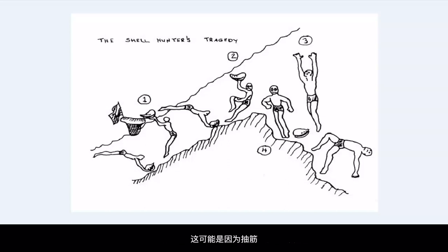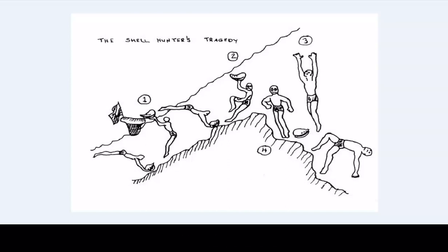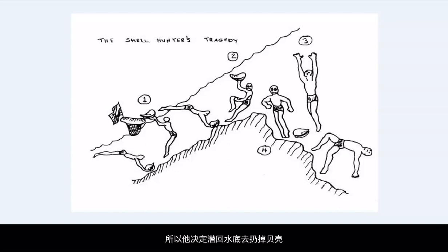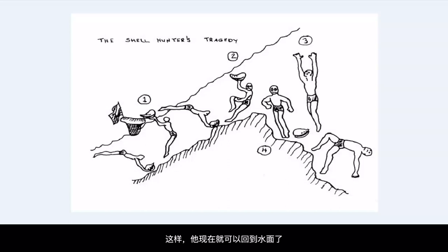This unexpected event could be cramps, which is shown at point 2. The diver had gone to the bottom, picked up a shell, but as he was bringing it to the surface, he could not reach the surface because of a bad cramp. So he decides to go back down, drop the shell, and get a big push off the bottom. Doing this, he would now be able to reach the surface.